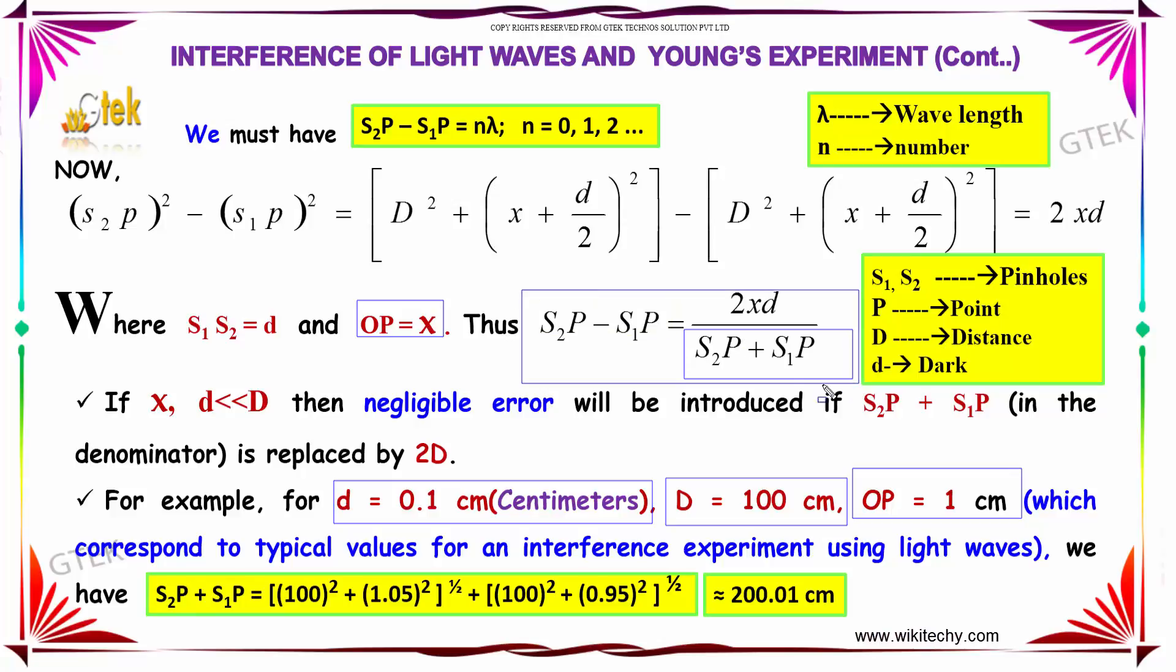then substituting these values in this equation, we will get 100 square plus 1.05 whole square root plus 100 square plus 0.95 whole square root. It is approximately 200.01 cm.